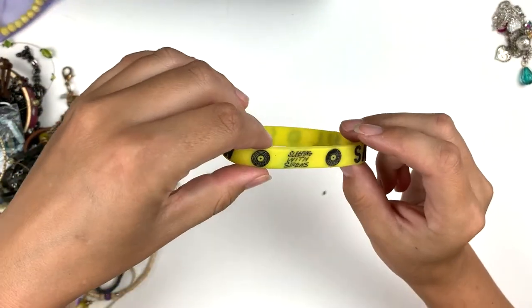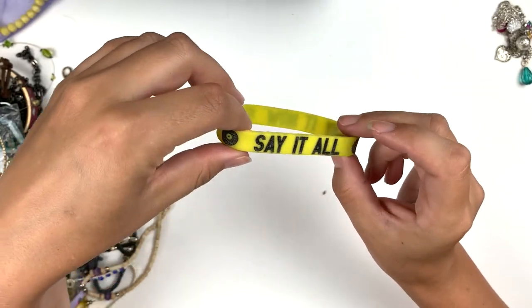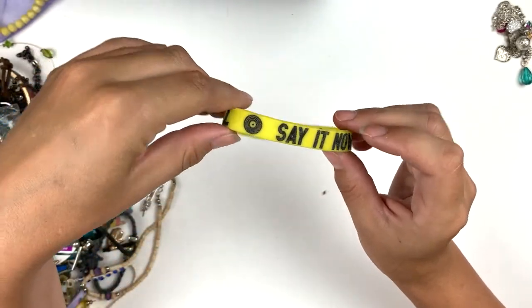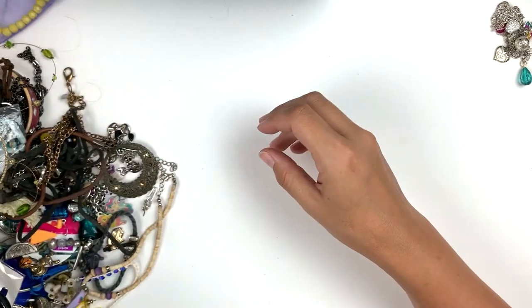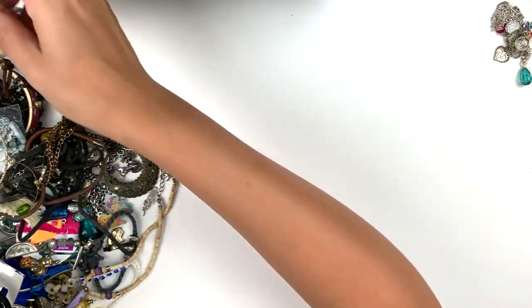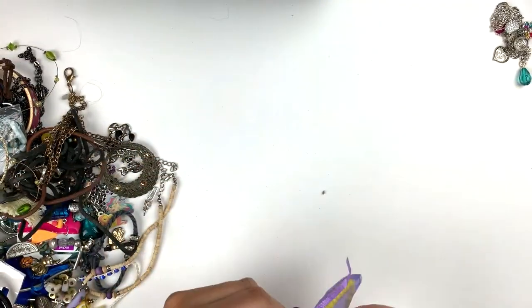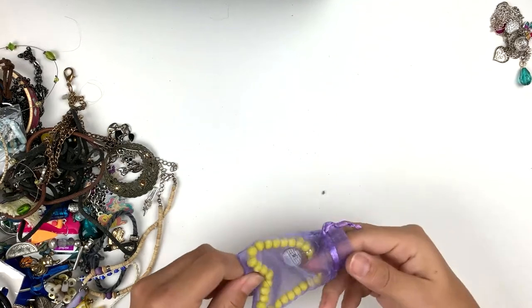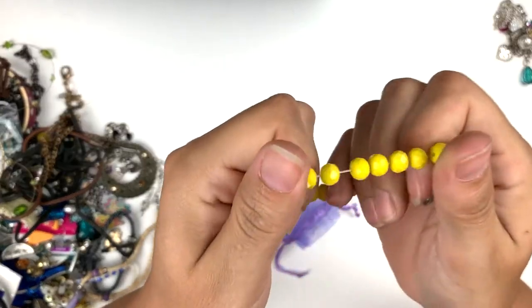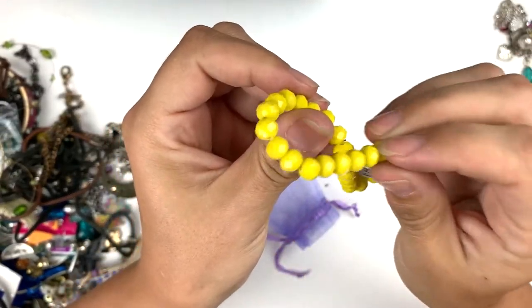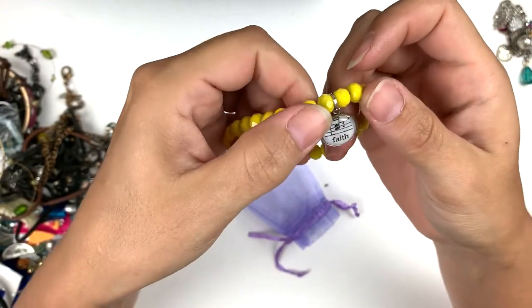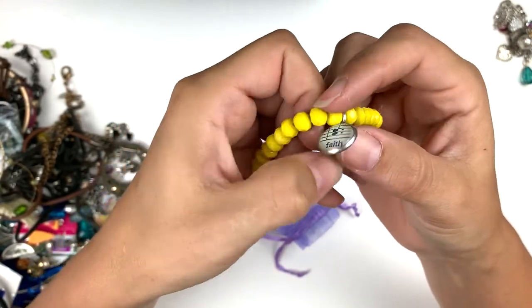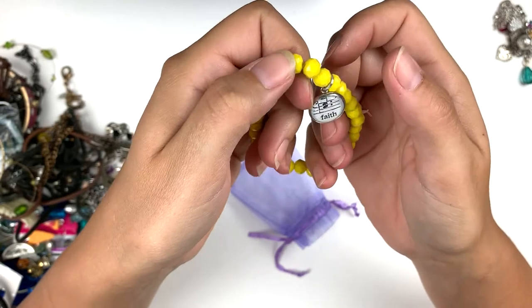I want to see what this is. Say it now. Sleeping with Sirens, say it all, say it now. This is cute. I think this is glass beads. It's heavy, yeah, that's heavy. These are glass beads and the little dangle says faith with a music note. That's cute.